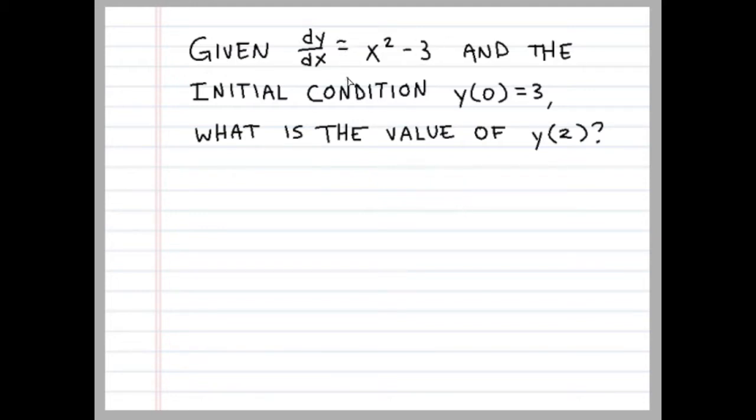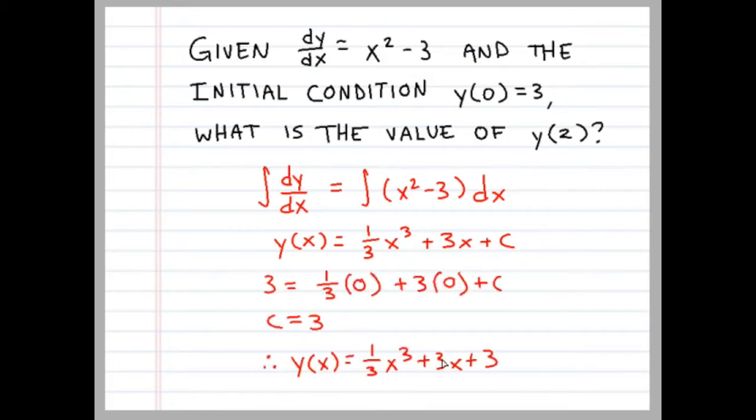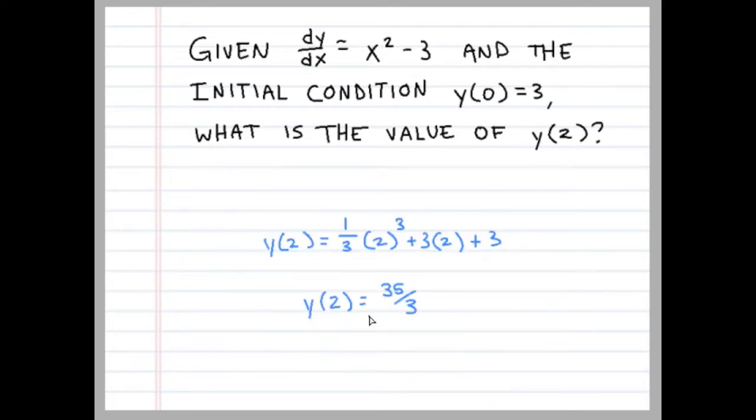This is a simple differential equation, so we can just take the integral of that equation. Integral of x squared minus 3 dx, and we get y(x) equals 1/3 x³ + 3x + c. We can evaluate this initial condition and get c, and we end up with this equation here, and then we can just evaluate 2 to find that y(2) equals 35/3.